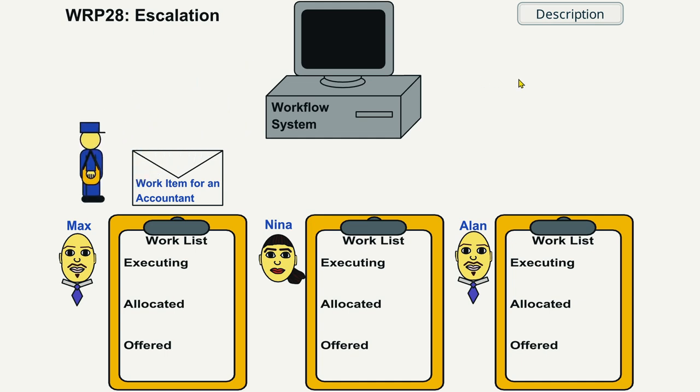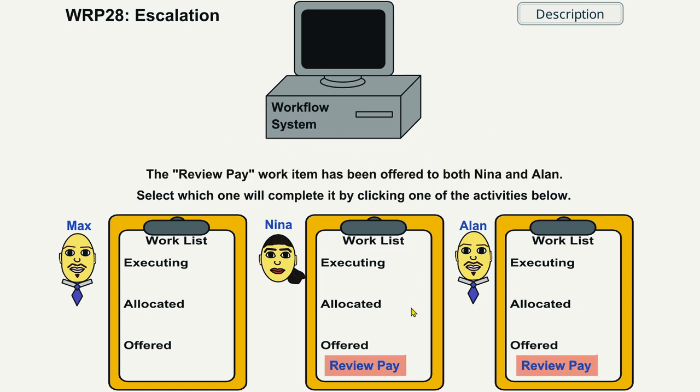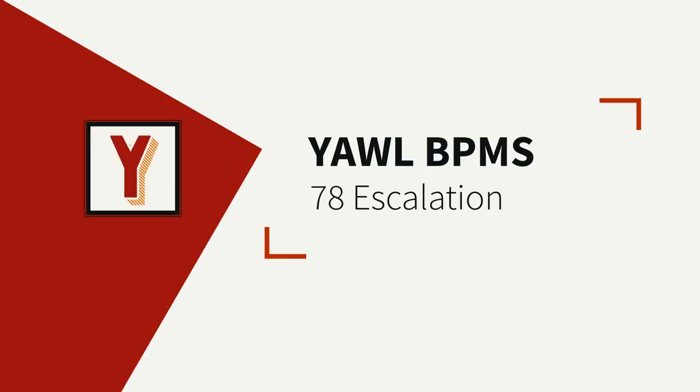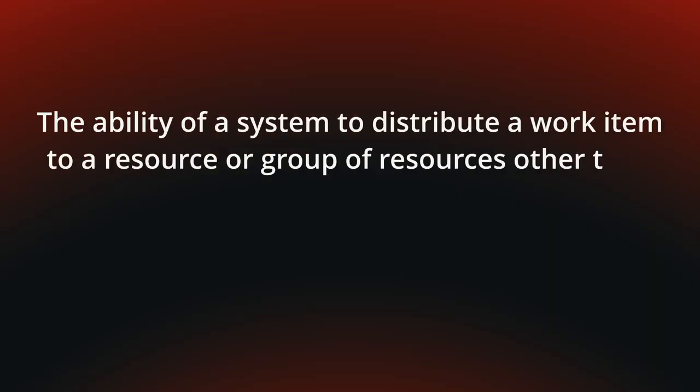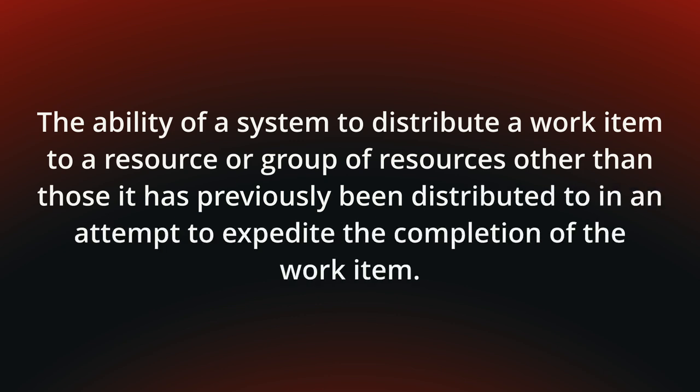The Review Pay Work Item has been allocated to the Accountant Max. After the deadline for completing has passed, the system has offered it to all Accountants. My name is Andreas Hense and this video is part of a series on Resource Patterns in YAWL. Today we talk about Escalation — the ability of a system to distribute a work item to a resource or group of resources, other than those it has previously been distributed to, in an attempt to expedite the completion of the work item. You can see the behavior in the following Flash animation.